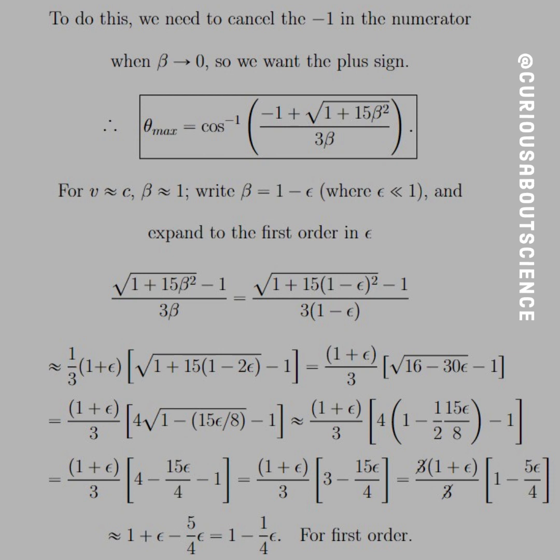So to do this, we need to cancel the negative 1 in the numerator for when beta goes to 0. So we want the plus sign in the quadratic equation. So with that, for v approximately equal to c, beta is approximately equal to 1.